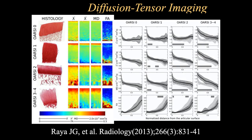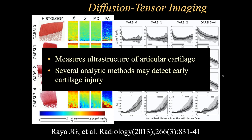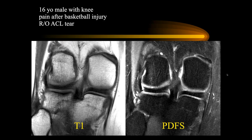There are newer techniques involving diffusion tensor imaging that many are interested in, but it's not proven to be very helpful right now and not something many people have gotten interested in. Now let's look at some abnormal articular cartilage clinically, and then we'll go back to the other techniques.